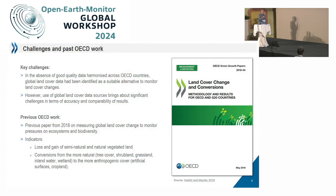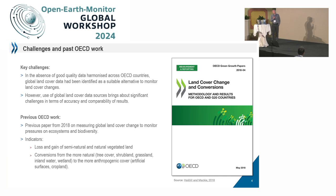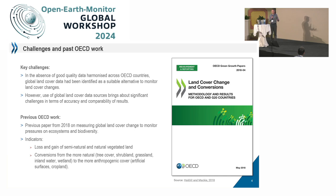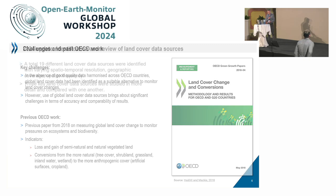About 10 years ago when we started working on this, the conclusion was that in the absence of good quality data harmonized across countries, global land cover data were identified as a suitable alternative. However, there are challenges, because the results are not always coherent with national statistics. In this work that Mikael will present in detail, we are using global land cover maps to monitor — as a proxy — pressures on ecosystems and biodiversity. We are mostly interested in the conversions from more natural land cover types to the more anthropogenic.